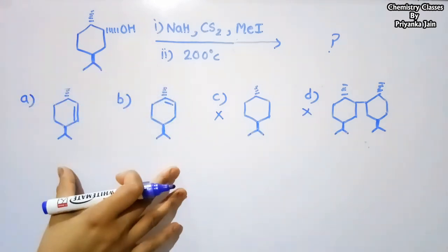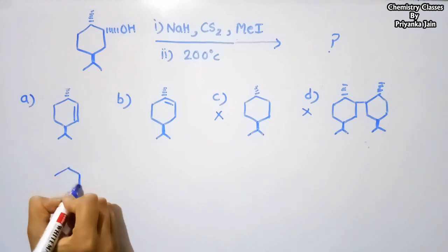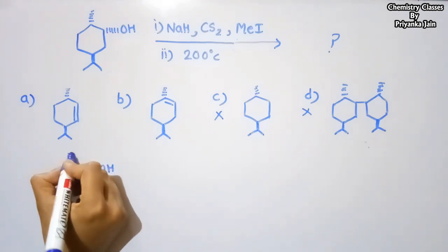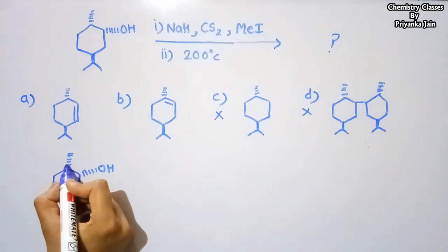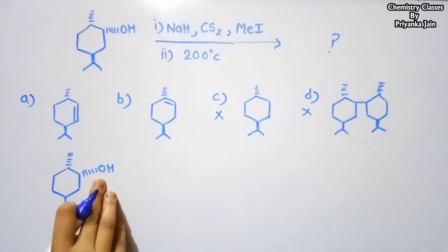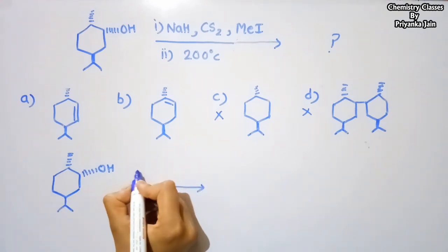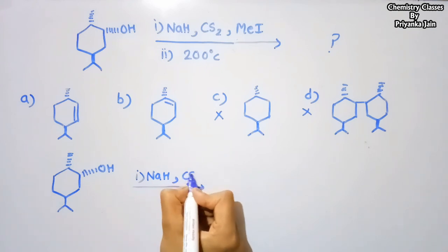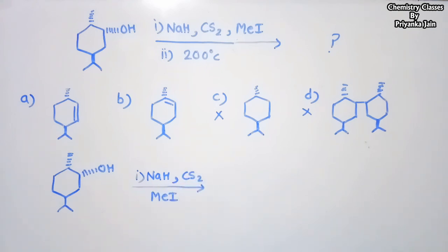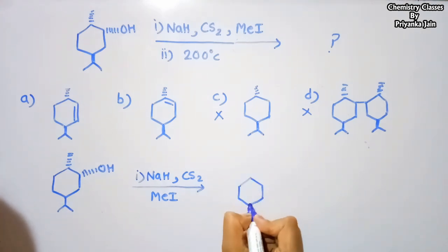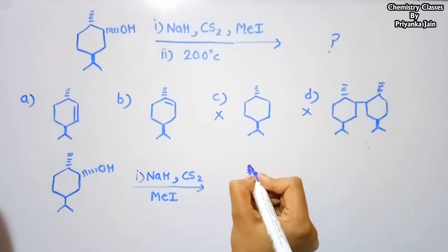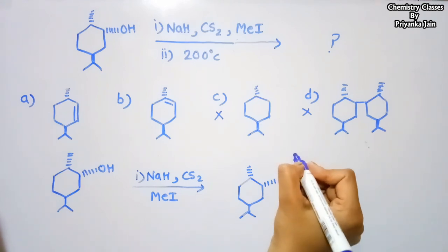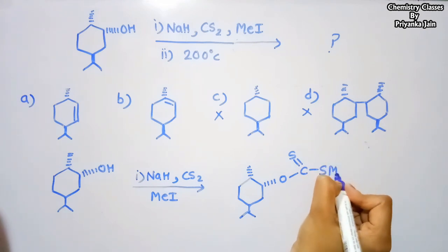In these two remaining compounds, we have to identify the stereochemistry. For this, we will see the mechanism. The methyl group is below the plane and the OH group is also below the plane. In the first step, when it is treated with NaH, CS2, and MeI, it gets converted to the xanthate.